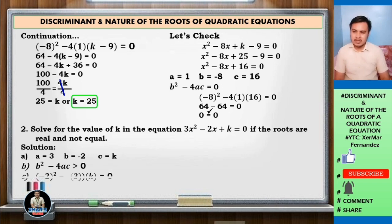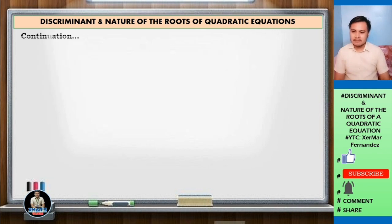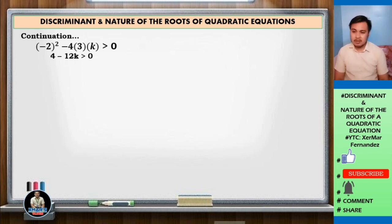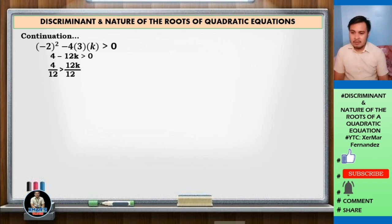Substitute: negative 2 squared minus 4 times 3 times k is greater than 0. Negative 2 squared is 4, and negative 4 times 3 times k is negative 12k, so 4 minus 12k is greater than 0. Transpose negative 12k to the right side of the inequality: 4 is greater than 12k. Divide both sides by 12: 4 over 12 is greater than k, which simplifies to 1 third is greater than k, or k is less than 1 third.